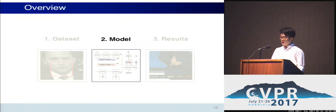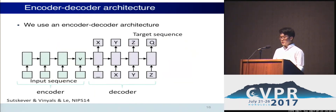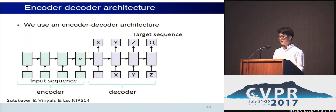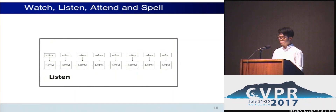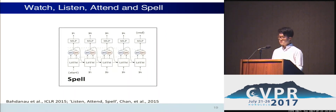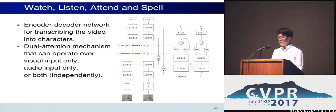Now I'll introduce the model and how to train the network using this dataset. The general architecture is an encoder-decoder model, where the network reads one input at a time — lip movements — and produces one output at a time, in our case characters. We consider two inputs: the lip movements and the audio. On the input side, the Watch sub-network takes the lip regions and generates an encoding, and a Listen module attends to the audio. On the output side, the Spell module reads the encodings and outputs one character at a time. We have a dual-attention mechanism that can operate over the visual input only, the audio only, or both at the same time.